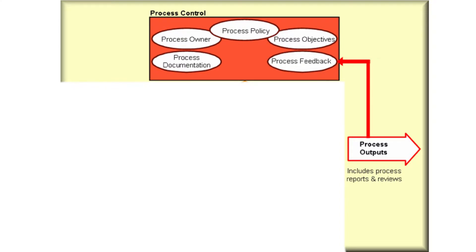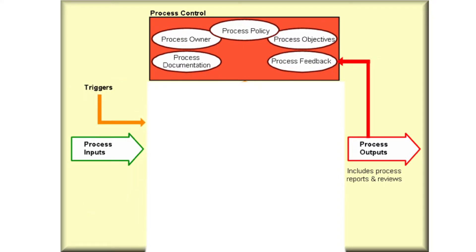Now we know what the fix should look like, so we go on to look at the process inputs. We'll get help from people like problem management and availability management to help define the inputs. In other words, if the output is something that's been fixed, then the input is something that's broken. So now we start to define the inputs — what could go wrong, what could break. Now we know what something broken looks like and what something fixed should look like, so we've got to work out how to get from broken to fixed. This is where we define the actual activities of the process itself, including all the specific procedures and work instructions needed.